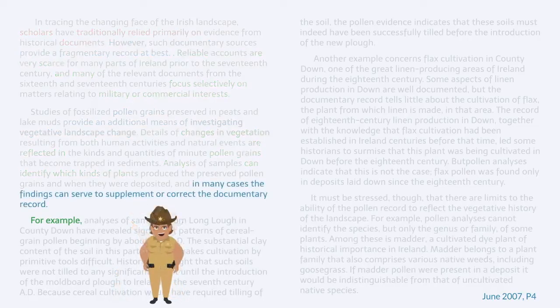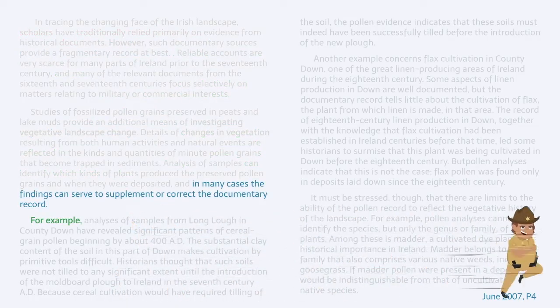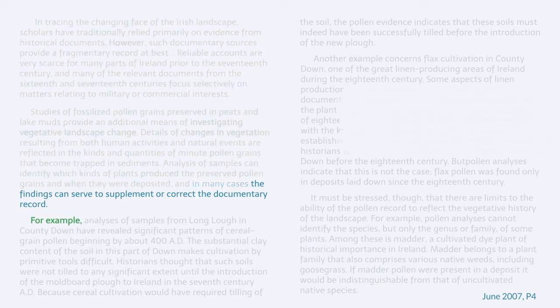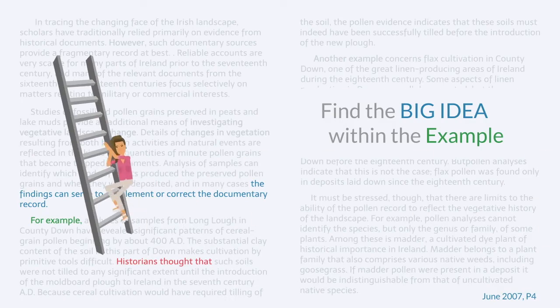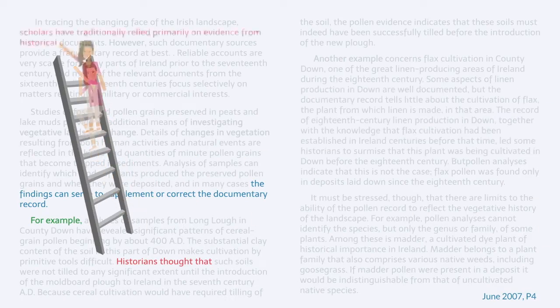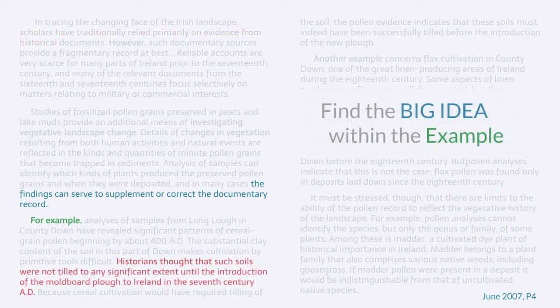Whenever I see 'for example,' I slam on the brakes and I reread the previous claim, because that had to be a big idea. As I read the example, I've got to see how it's illustrating that big idea. So I want to see an example of the pollen grain correcting the documentary record. Once I see 'historians,' I'm like — yeah, the scholars that use documents. Callback. So this example should show the pollen grain correcting the documentary record.